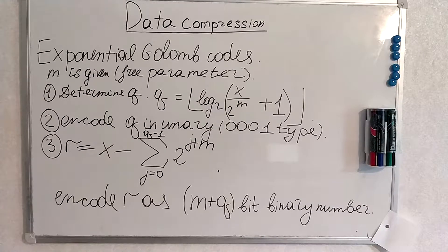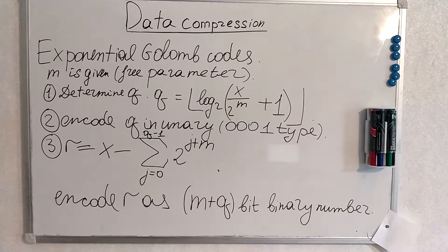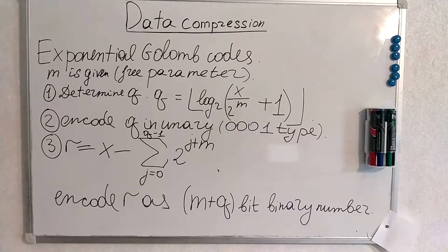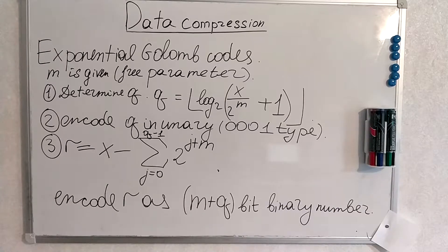We determine Q. Q is determined by the formula given on the whiteboard; X is our number, and M in the formula is the number given. We encode Q in a unary manner, where zeros represent the number and one terminates the sequence. Then we calculate R by the formula given on the whiteboard, and we encode R as an M plus Q bit binary number, which means we calculate M plus Q — this number represents the number of bits which make up R.